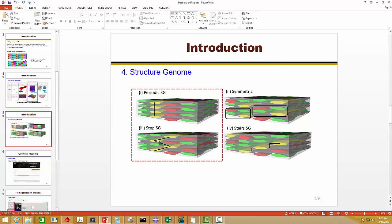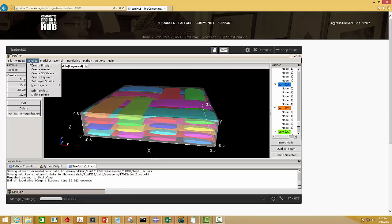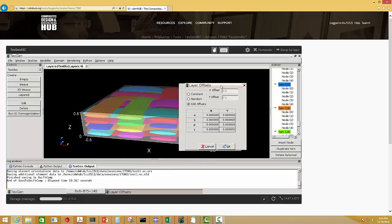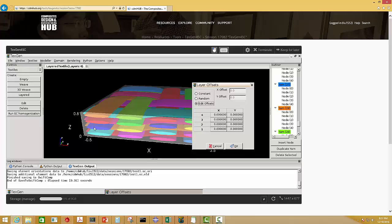You can see it's like a step configuration. And then all I need to do is go to Textiles, Set Layer, Offsets. Click this Edit Offsets. And I want to move the second and the fourth layers. And I know that the domain of each yarn is 1 unit. So I just need to set this as 1 and this as 1. And let's see what the model will look like. Click OK.